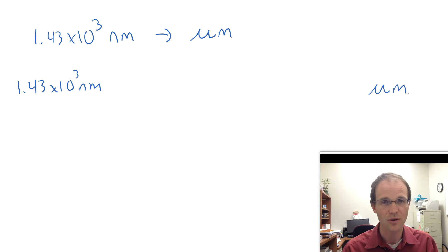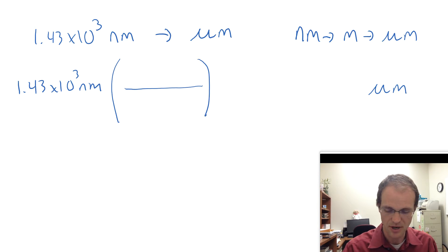And again, we know just from experience now that we're probably not going to be able to do this in one step. So our plan is to go from nanometers to meters to micrometers. And so we're going to do this in two steps. What goes in the bottom? It's got to be nanometers because we want those to cancel, which means meters has to go in the top because that's what we're looking for. We're looking for meters in that middle step.